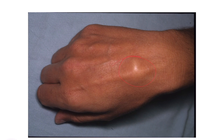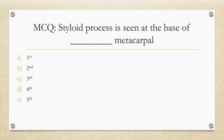Treatment includes painkillers and wrist bands, especially while playing. Movement of the wrist can be restricted using a splint. If the pain is severe and persistent, the bossing can be surgically excised. In summary, the styloid process is seen at the base of the third metacarpal.